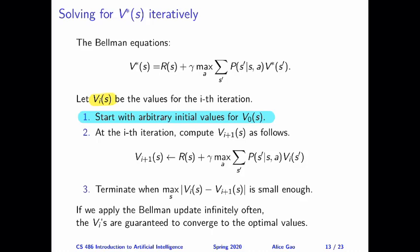And then at the i-th iteration, what do we do? Well, at the i-th iteration, we're going to update our estimates for the v's. So if you look at this update rule, this update rule looks almost exactly like the Bellman equations, except for a few details.